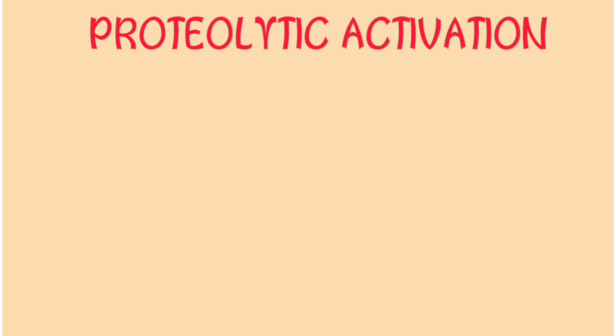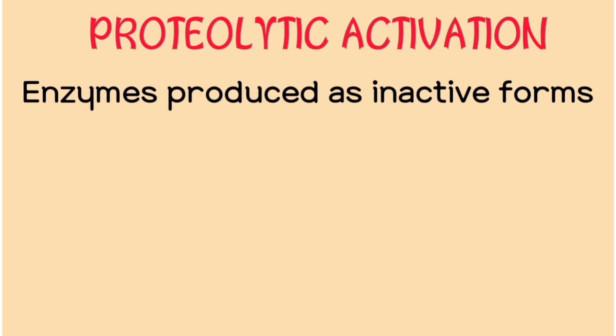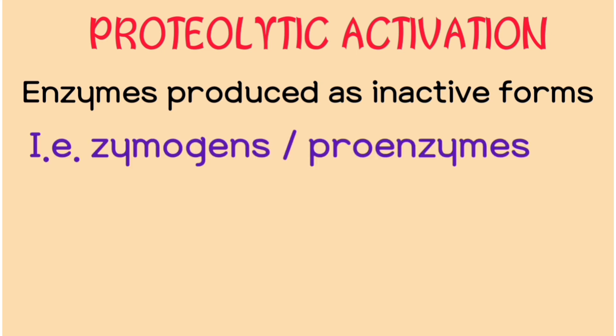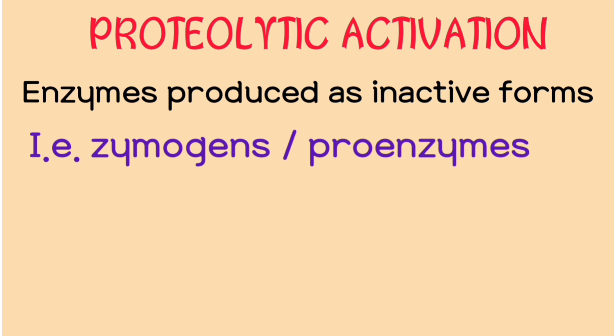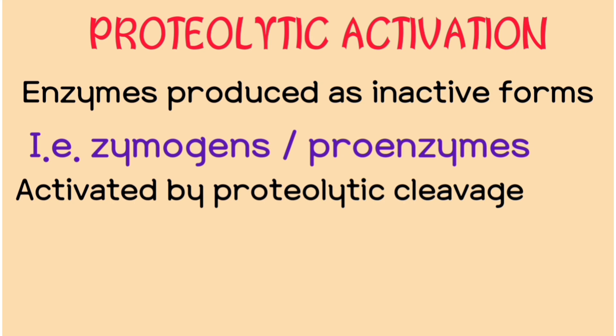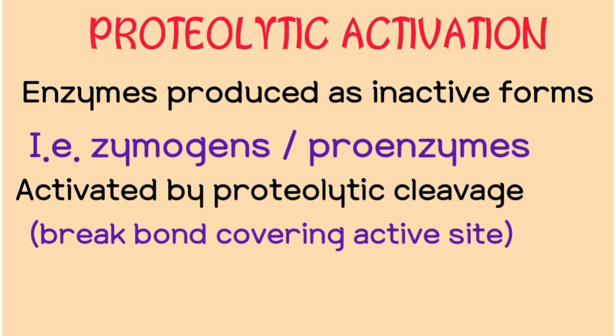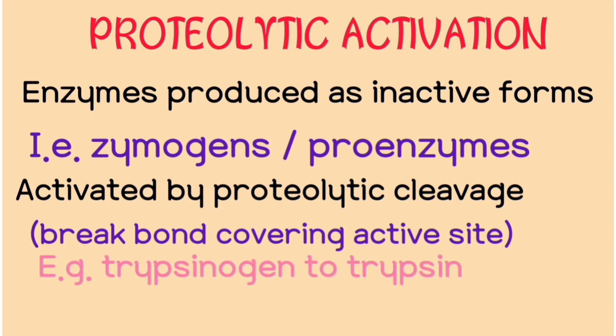Let's look at proteolytic activation of enzymes. Some enzymes are not produced as mature forms — they're produced as inactive forms called zymogens or pro-enzymes. They're like baby enzymes: they have potential but can't yet function as actual enzymes. To become active, they must be activated by proteolytic cleavage — a breaking of a bond — which exposes the active site that was originally covered. An example is the conversion of trypsinogen to trypsin. This activation is usually irreversible.